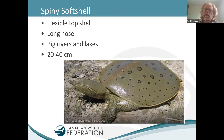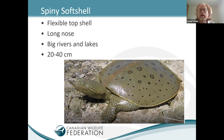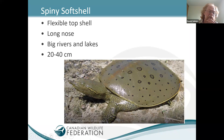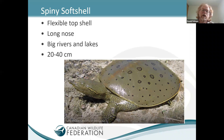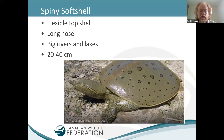The spiny softshell turtle is very unusual — unlike our other Canadian species, it does not have a hard rigid shell; the shell is quite flexible. It also has a long nose that allows it to nestle in shallow water and leave the tip above the water like a snorkel, allowing it to breathe while remaining hidden. It's also a species of big water — big rivers and lakes — so you won't find it in marshes or ponds. Habitat can help identify species. It is also one of our largest species.